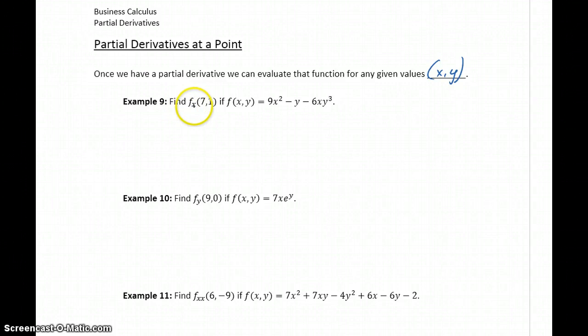In Example 9, we want to find f_x, the derivative with respect to x, and then evaluate that at x equals 7, y equals 1. Our derivative function will be taking the derivative of 9x² with respect to x, minus y with respect to x, minus 6y³ with respect to x. In this case we'll get 18x minus 0 minus 6y³. Then we take that derivative function and evaluate it at x equals 7, y equals 1, which gives us 18 times 7 minus 6 times 1³, or 120.